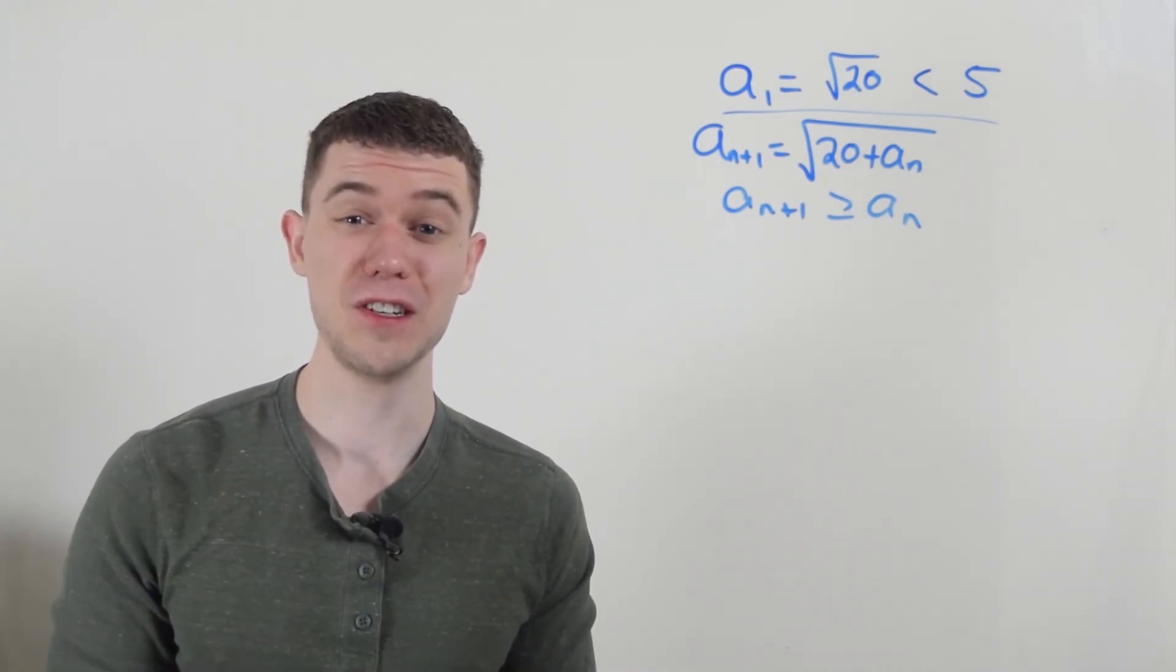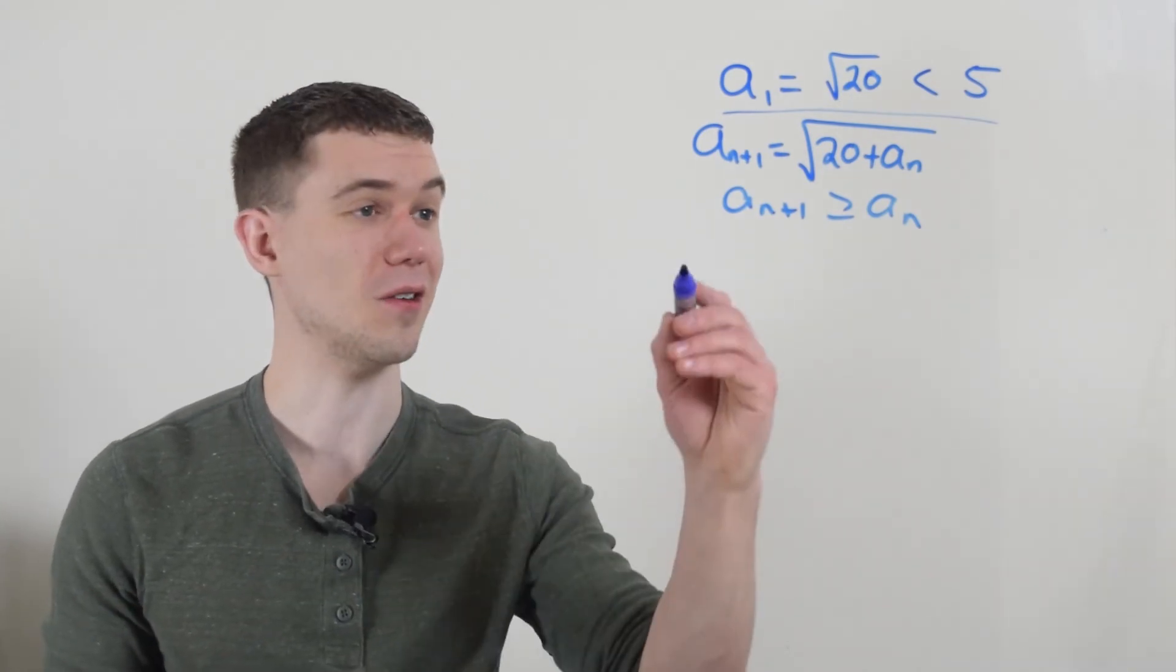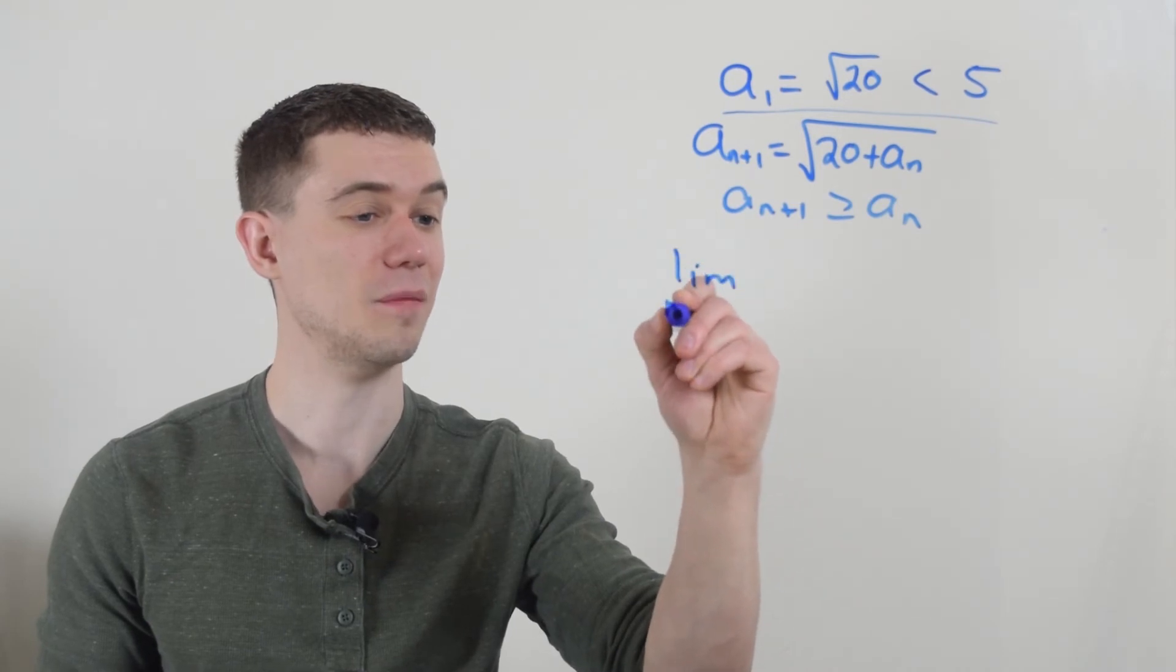And if it converges, and it's a recursive thing, I can find its limit. And this is the cool way to do it. So I'll just simply take the limit of both sides. I'll take the limit as n goes to infinity on both sides of my equation.